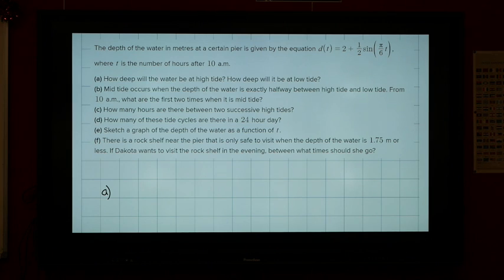The depth of the water in meters is given by the equation d(t) = 2 + (1/2)sin(π/6 t), where t is the number of hours after 10 AM. I think that's probably important to remember that it's after 10 AM. So 10 AM would be like time zero, 11 AM would be 1. If we've got 1 as our answer in our function, that would be then 11 AM. And we can keep on going like that.